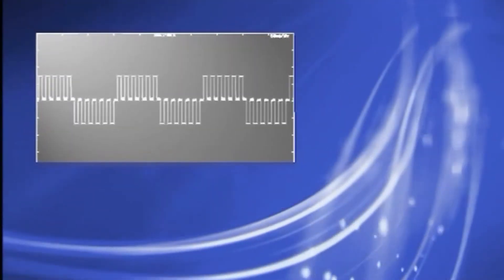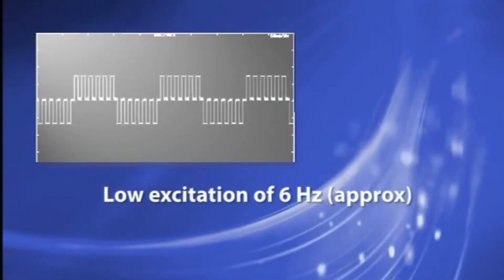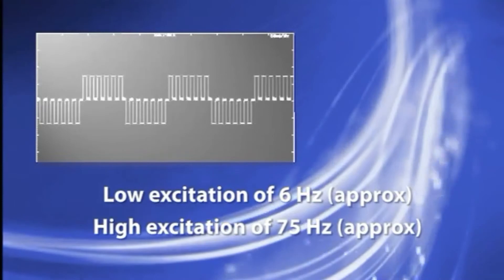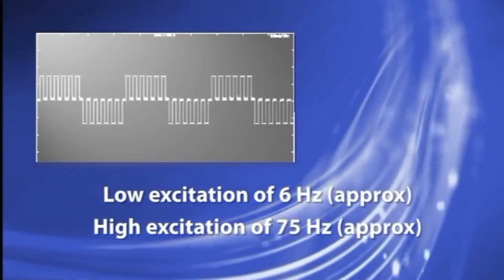The dual frequency waveform can be observed by putting an oscilloscope on the excitation terminals of the Yokogawa ADMAG magnetic flow meter. You can see the low excitation of approximately 6 hertz, the high excitation of 75 hertz, and the two signals superimposed on each other.